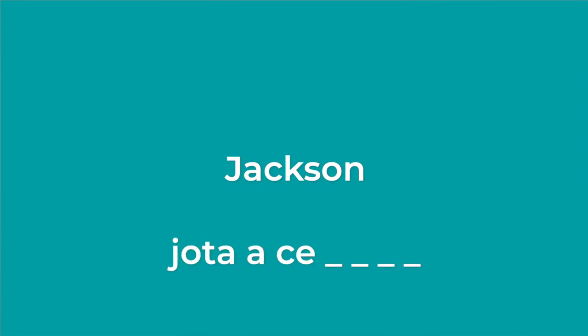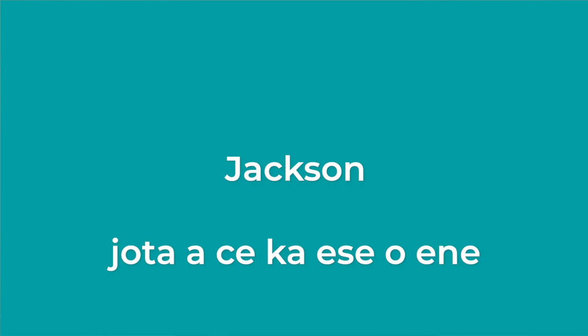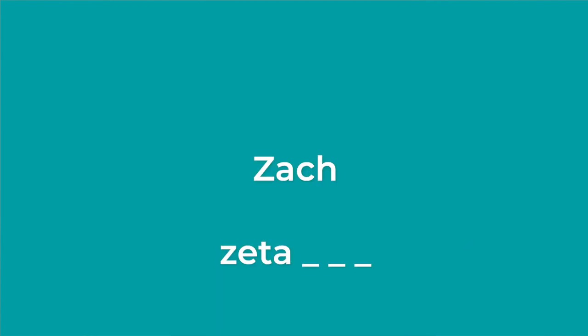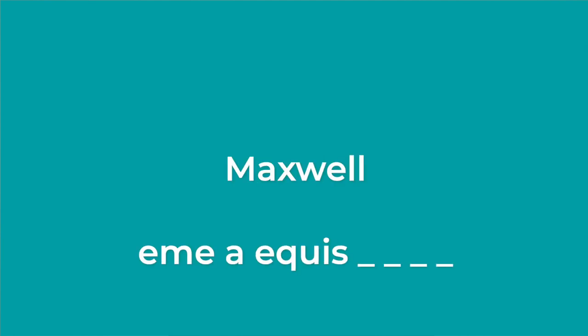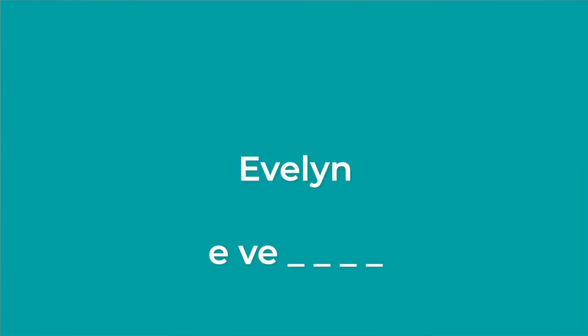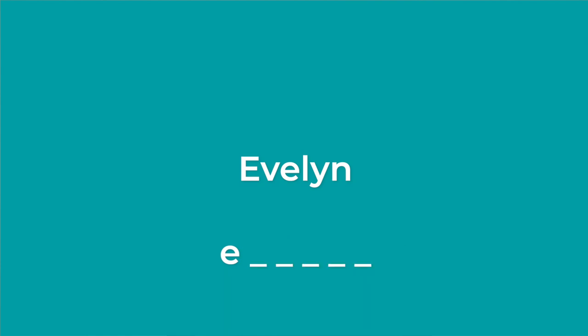Now let's put it all together and do some practice. I'm going to flash up some English names and we're going to practice spelling them in Spanish. If you want to have a go yourself, make sure you pause the video before I give away the answers. So we have Jackson. And for Evelyn — if she wanted to make sure the V is understood, she might say E, UBE, E, L, Y, N.